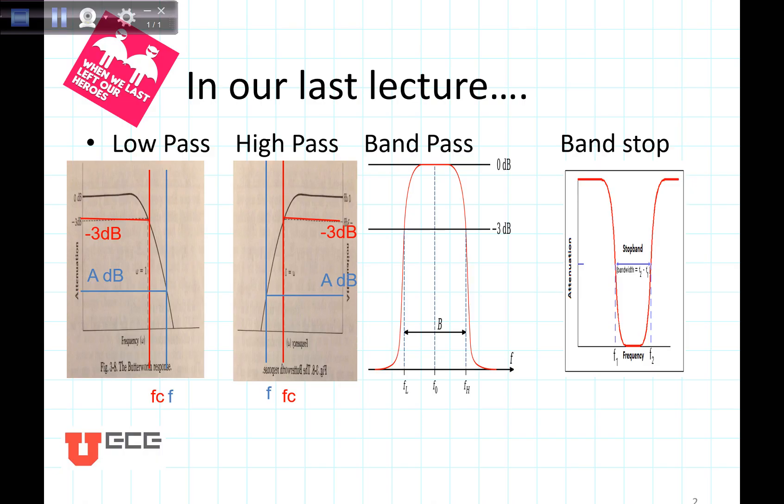In our last lecture, we talked about four kinds of filters: low pass, high pass, band pass, and band stop. And how each of these could be implemented with lumped elements, capacitors, and inductors that can be soldered in place.